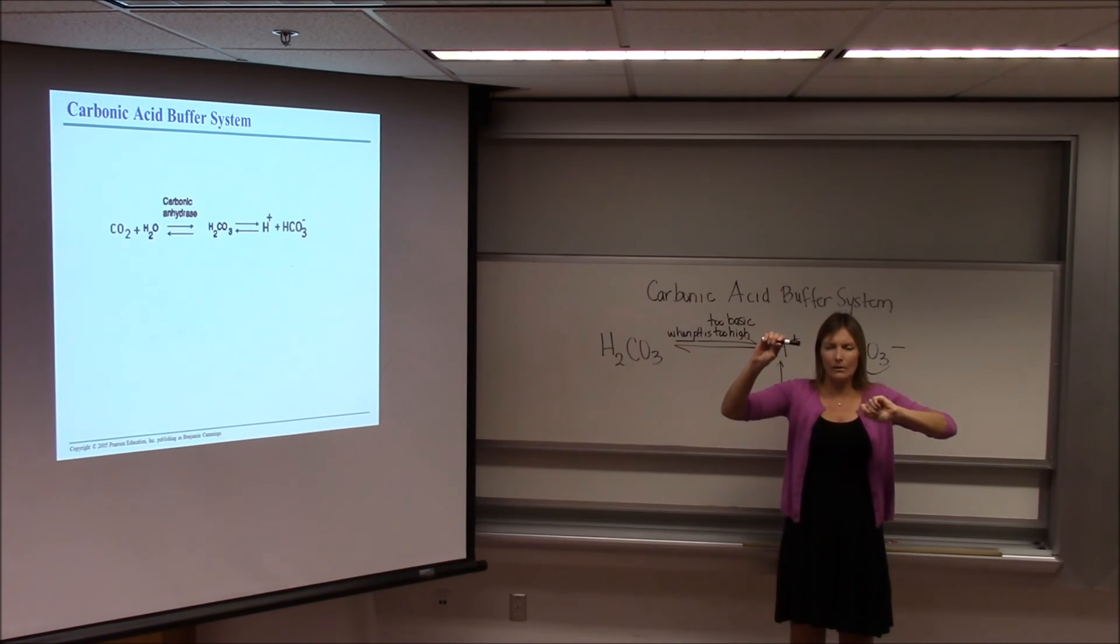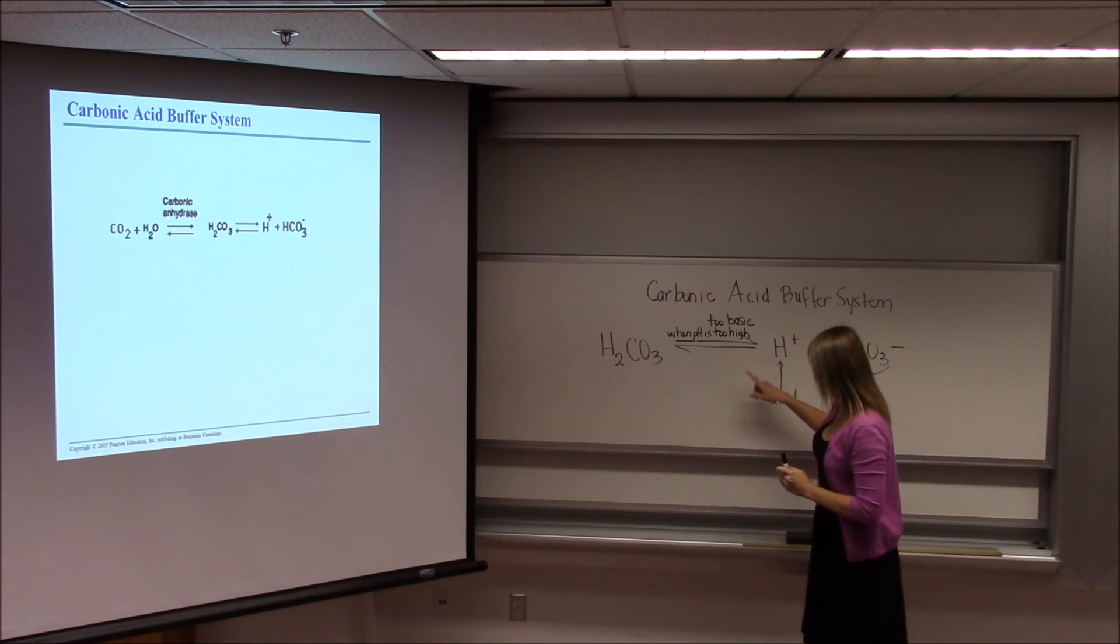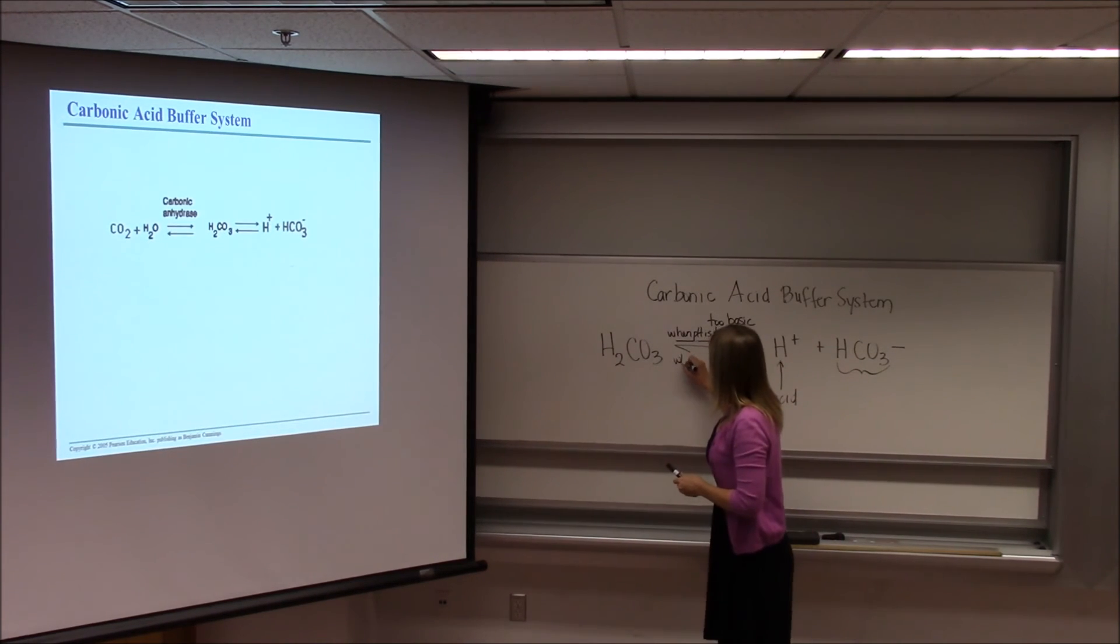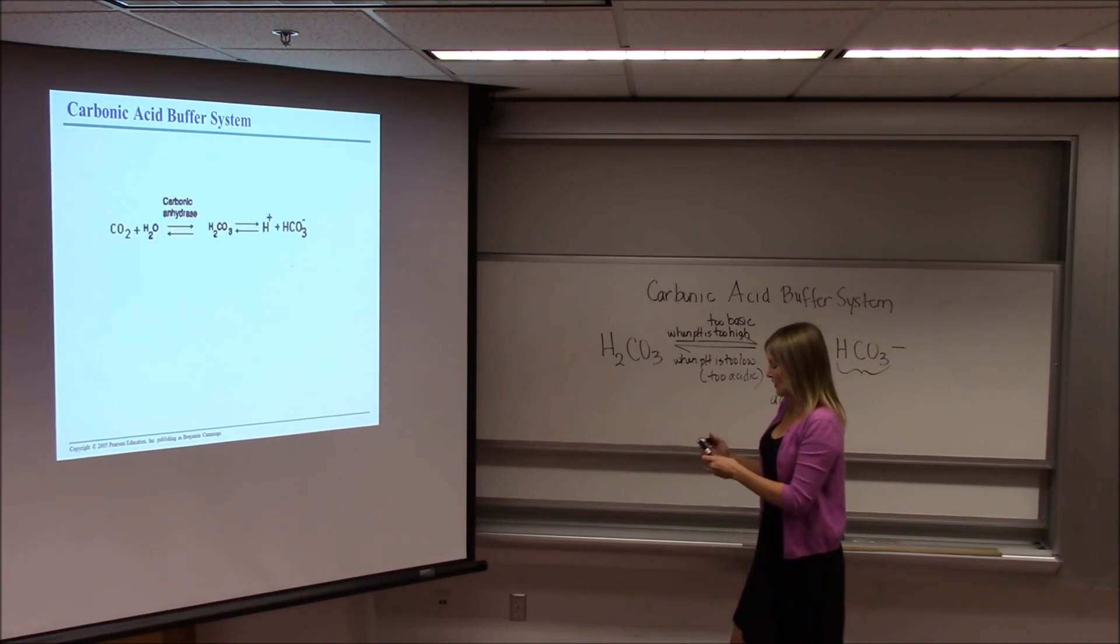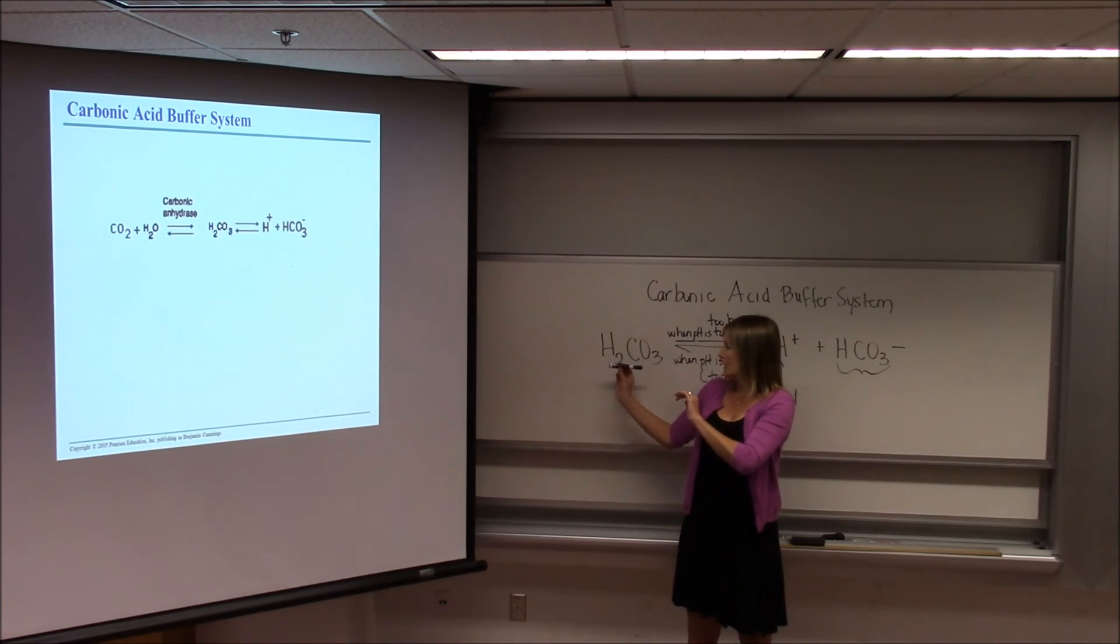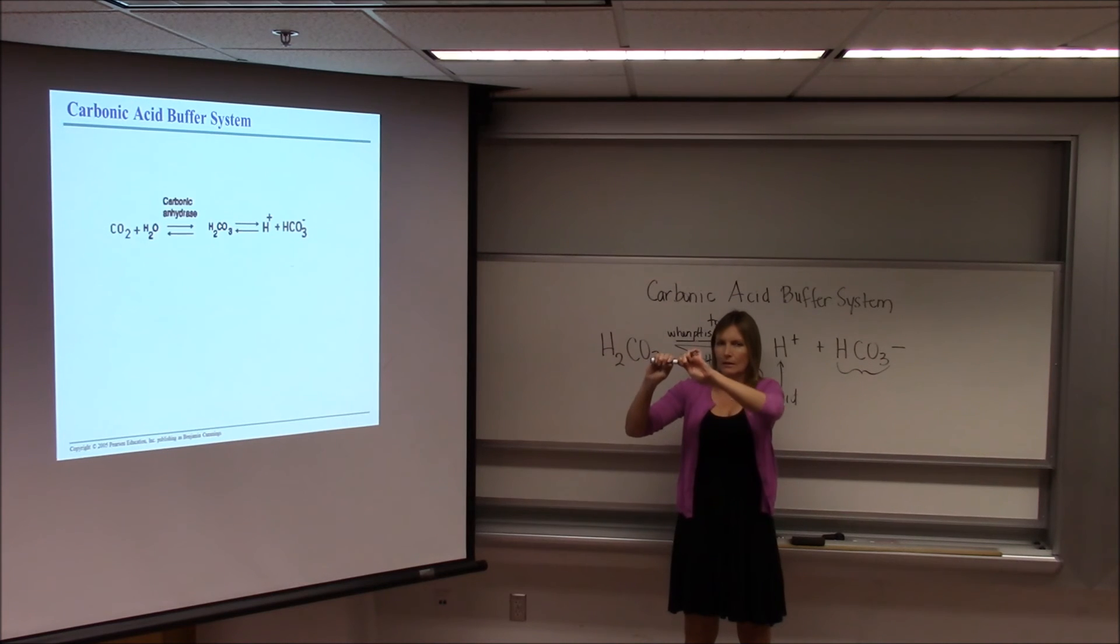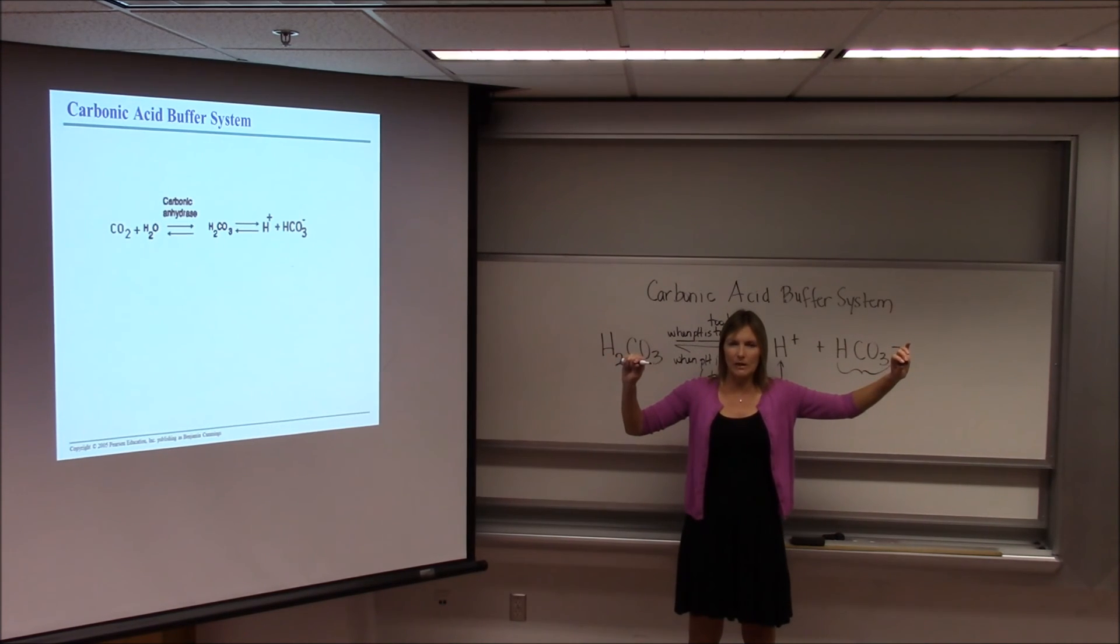So when the pH gets too low, we want to shift back the other direction. So when pH is too low, in other words, too acidic, we're going to shift back this direction. Again, one more time. Here's our H2CO3, not an acid. When this H+ is free in the solution, it's going to make it more acidic. It's going to lower the pH. Put them back together, we increase the pH.